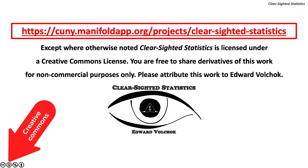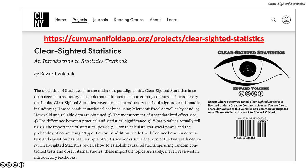Except where otherwise noted, Clear-Sighted Statistics is licensed under a Creative Commons license. You are free to share derivatives of this work for non-commercial purposes only. Please attribute this work to Edward Volchuk. You can access Clear-Sighted Statistics for free, along with its Excel and PowerPoint files, on the CUNY Commons at https://cuny.manifoldapp.org/projects/clear-sighted-statistics.